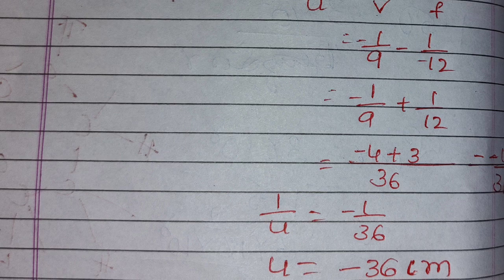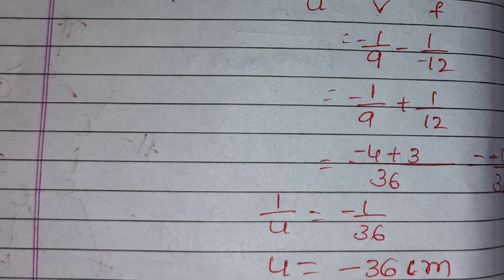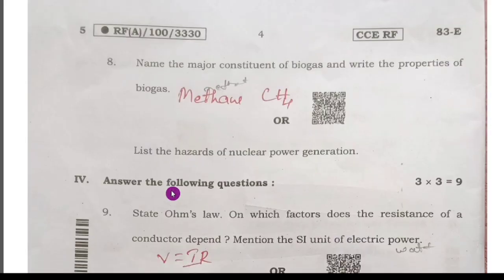1 by u equals minus 1 by 36. So u equals minus 36 centimeter.